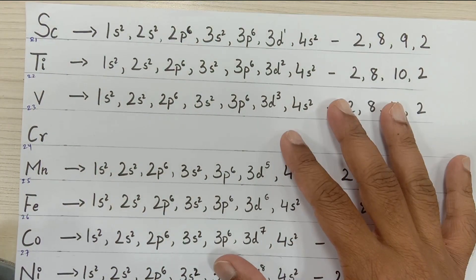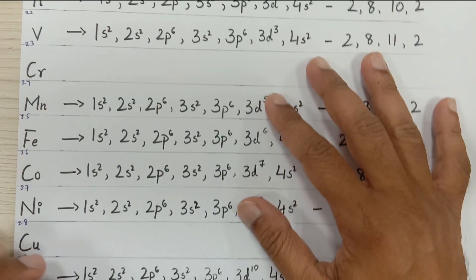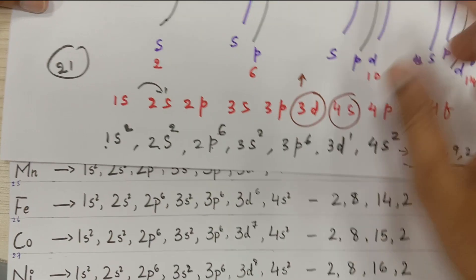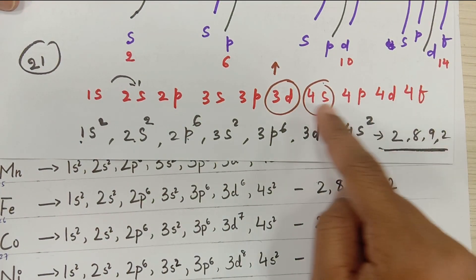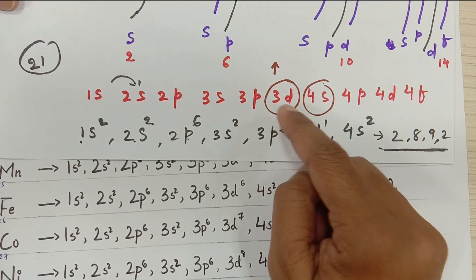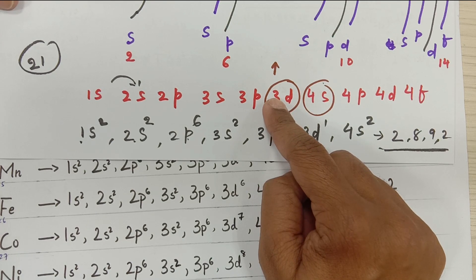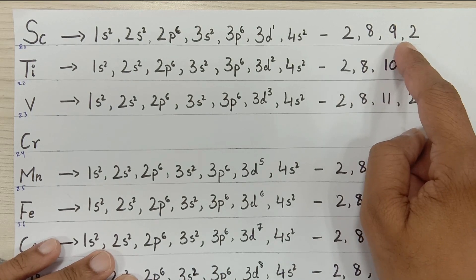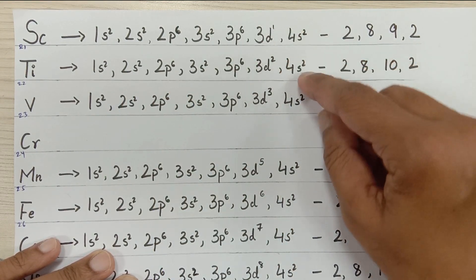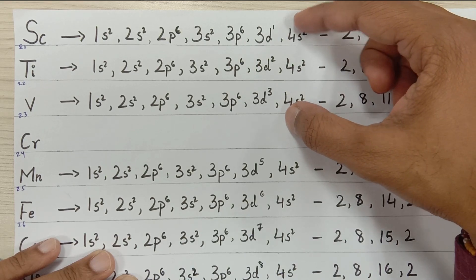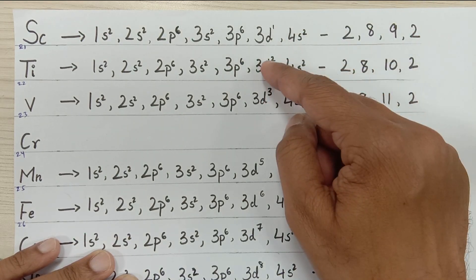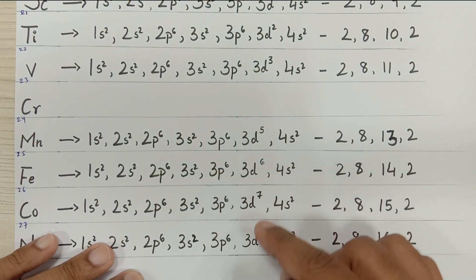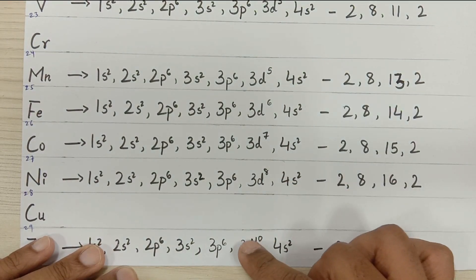You can try the remaining elements yourself by pausing the video — just make sure you fill 4S before 3D, since 4S has lower energy than 3D. As electrons continue filling 3D: 3D2, 3D3 — then there are two exceptions — then 3D5, 3D6, 3D7, 3D8, two more exceptions, and finally 3D10.